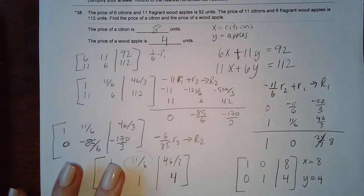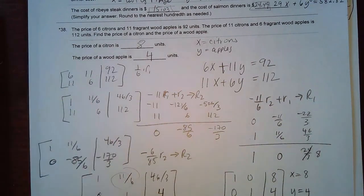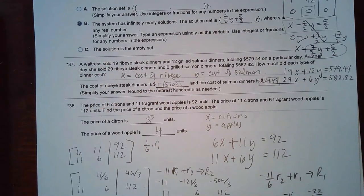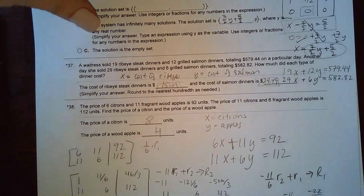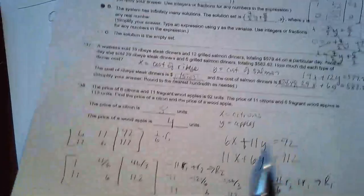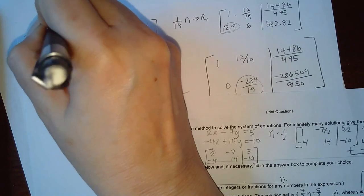So x equals 8 and y equals 4, meaning citrons cost 8 units and apples cost 4 units. Although there were fractions in the middle of the problem, there were no crazy decimals throughout — this is probably more similar to what you'll see on the test, numbers-wise. That's it for the review.